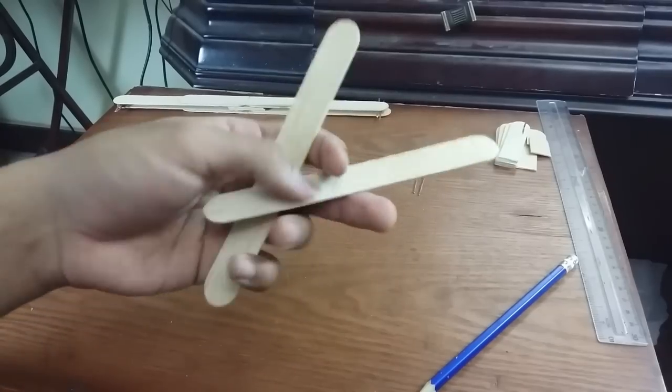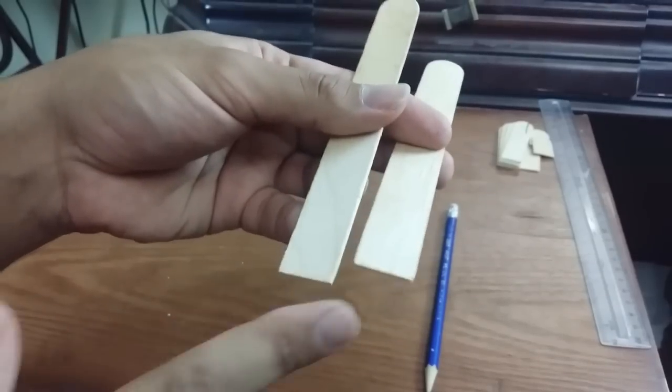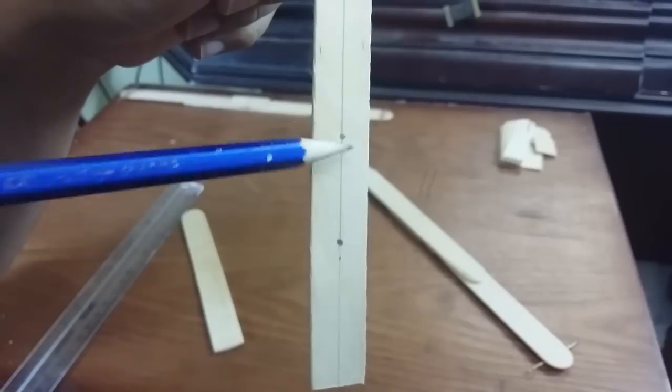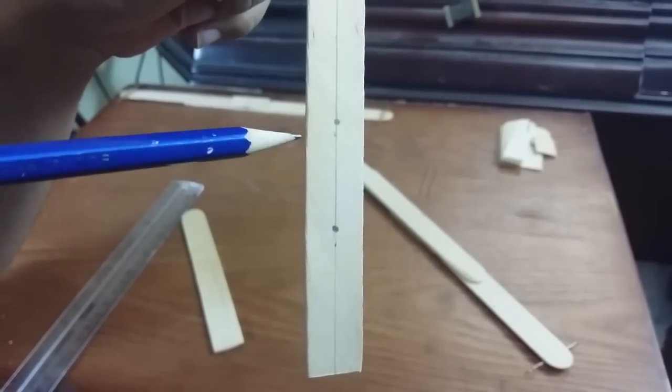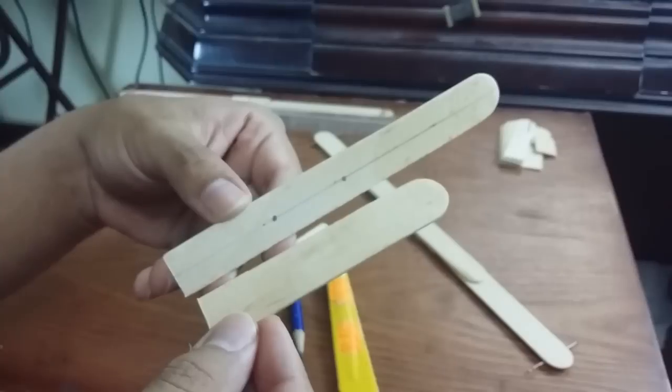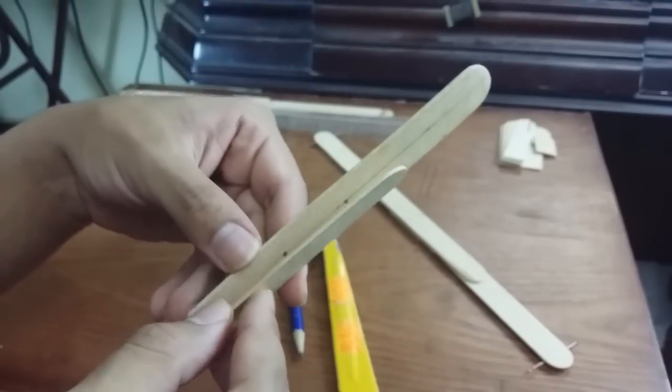Now prepare two pieces of wood and I will glue it in the other side like this. Now we need two more sticks. Cut the edges in one side like this. Draw two points right in the middle. The distance between them is three centimeters.